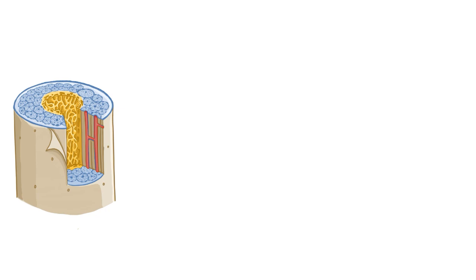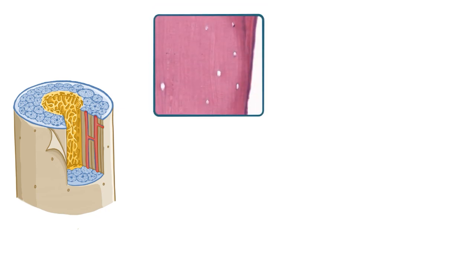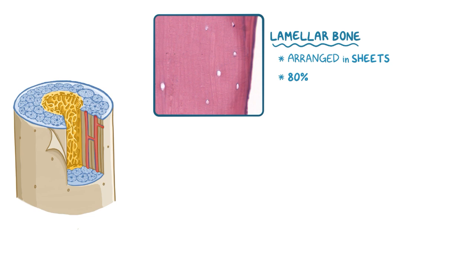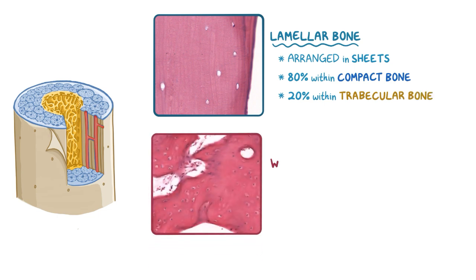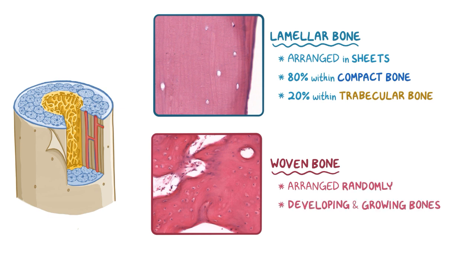Microscopically, both compact and trabecular bones will be organized or arranged in two forms. Layered, or lamellar bone, has a bone matrix arranged in sheets — 80% of lamellar bone is found within the compact bone, and only 20% is found within the trabecular bone. The more immature woven bone has collagen fibers that are arranged randomly. This form of bone is mostly found within developing and growing bones, as well as bones that have healed after being fractured.